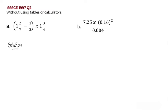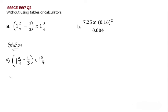For part A, we have one whole number two over seven minus one over three, multiplied by one whole number three over four. To solve this kind of expression, we first need to change the mixed fractions into improper fractions. We do that using the whole number multiplied by the denominator, which is seven — so one multiplied by seven.